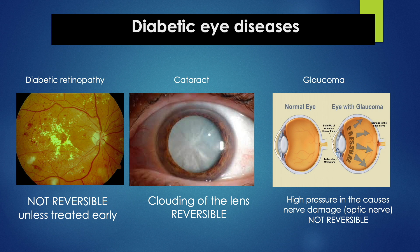Among the most common structures involved is the retina. Once it affects the retina, the condition is only reversible if you treat them early. Diabetes can also affect the lens, causing early cataract. Blurred vision is treatable if you come early.